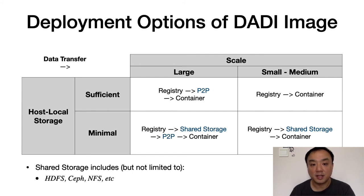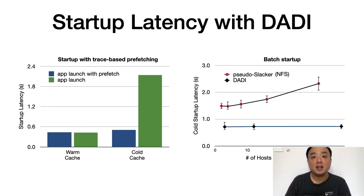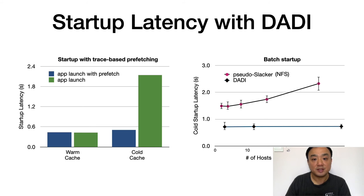It's worth noting that the bottom right case is actually a scheme of distributed block store that is commonly used today for virtual machine clusters. The left figure shows the results of cold startup of a single container. We can see that DADI is much faster than other approaches, no matter starting from registry or P2P route. In case of warm startup, as shown in the right figure, DADI is still faster, especially when disk performance is limited. The left figure also shows results of startup latency with trace-based prefetching. We can see that the prefetching dramatically increases the performance, and the result is getting very close to that of warm startup. The right figure shows the results of batch startup of multiple containers. The startup latency with DADI is much lower and remains largely constant as the number of instances increases.